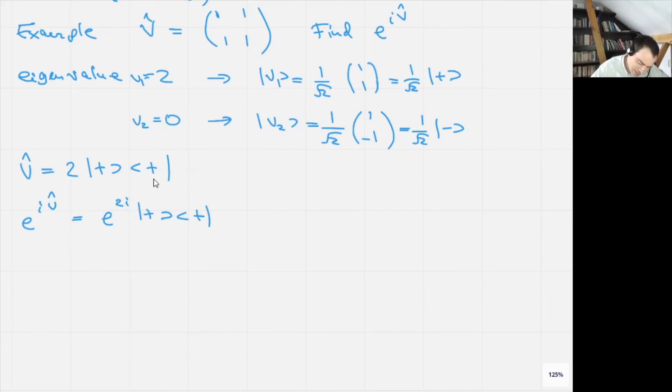Because look, in the V there is a second eigenvector that has zero eigenvalue, and therefore in the V it plays no role. But in the exponent it will play a role, because the exponent of zero is one, and therefore it becomes physical.